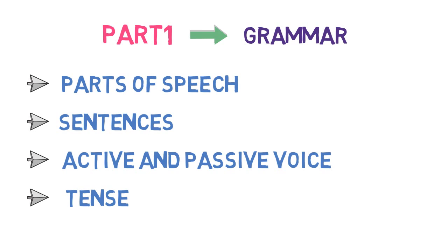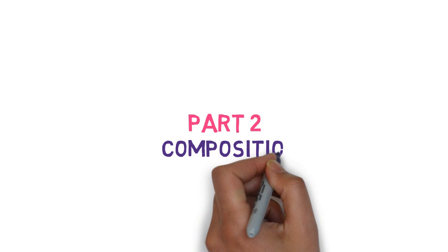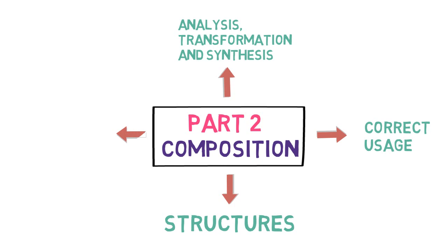Now comes part 2 of the book, which covers the advanced topics of grammar and writing. It is majorly divided into four parts. Number 1: Analysis, Transformation and Synthesis. Number 2: Correct Usage. Number 3: Structures. And Number 4: Written Composition. Let's discuss in brief what each section covers.